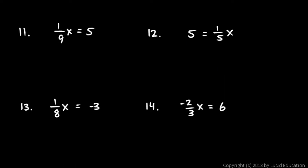Number 11: 1 ninth times x equals 5. I can get rid of this 1 ninth by multiplying by 9. If I multiply by 9 on the left, I multiply by 9 on the right. On the left, the 9s cancel out, leaving me with x equals 5 times 9, which is 45. x equals 45.